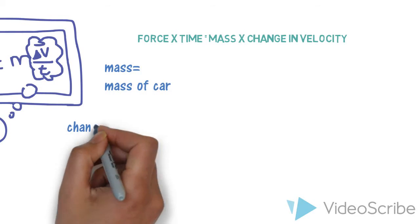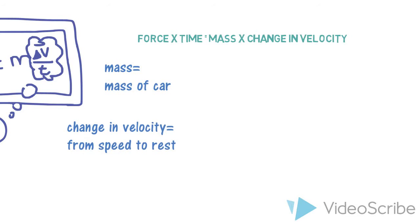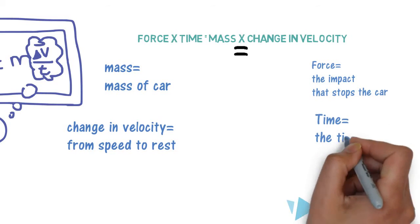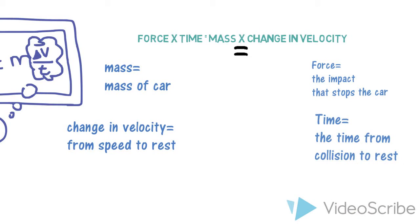The mass is the mass of the car. The change in velocity is from the driving speed to zero. The force is the impact that stops the car, while time is how long it takes the car to come to rest. The mass does not change, and the change in speed is uncontrollable during and after the accident.